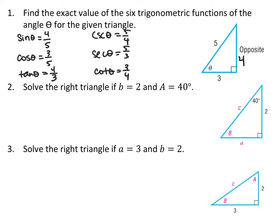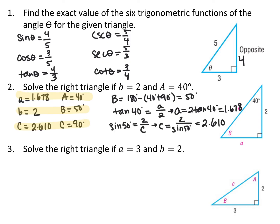For the next problem, we solve the triangle given B equals 2 and angle A equals 40 degrees, with angle C being 90 degrees. I write out all six pieces of information and fill in what I know. The missing angle B is 50 degrees, since angles must add up to 180. Setting up trig ratios: tangent of 40 degrees equals A over 2, so A equals 2 tangent 40 degrees, which is approximately 1.678. For side C, sine of 50 degrees equals 2 over C, so C equals 2 over sine 50 degrees, approximately 2.610.